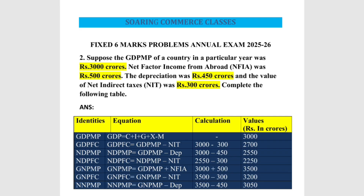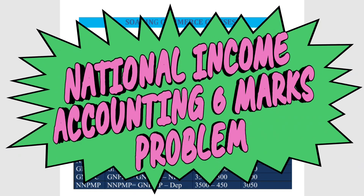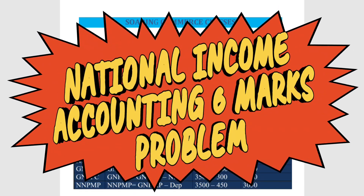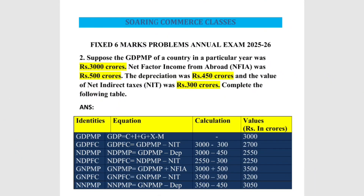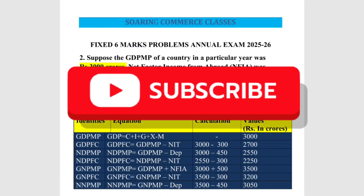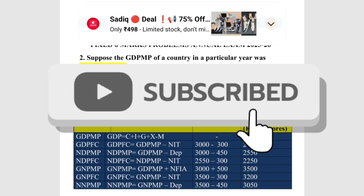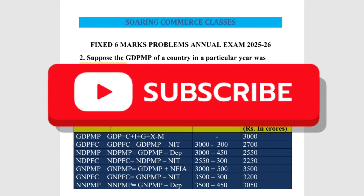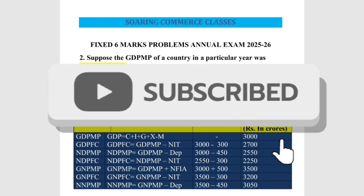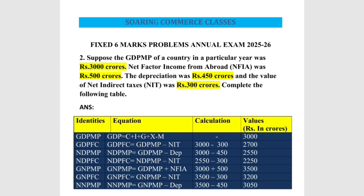In this video, I'm going to be discussing one of the problems from National Income Accounting for six marks. In the P.U. question bank and model question papers, this question has been asked for six marks. If you learn this question, you are definitely going to be scoring six out of six marks.